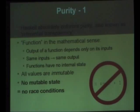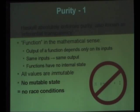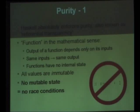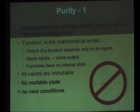Haskell programmers don't really like race conditions, so they eliminate them altogether, through a thing called purity — which is share nothing taken to its extreme. Haskell absolutely enforces purity, also known as referential transparency. The function is a function in the mathematical sense: if you give it the same inputs, you always get the same output. That means you have to have no internal state, you can't pass a reference around that points to something you modify, everything has to be immutable. If you have no mutable state, you can't possibly have a race condition.